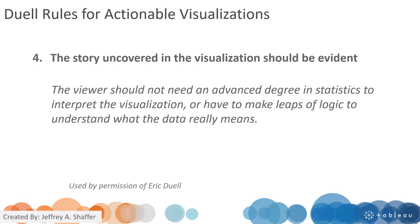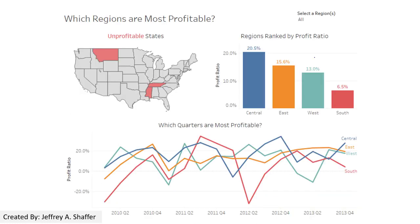The fourth principle is that the story uncovered in the visualization should be evident. The viewers should not need any advanced degree in statistics to interpret your visualization. Using the same earlier example, the visualization answers the question in multiple ways — we know the unprofitable states, can rank profit ratio, and see regions over time. The author sets up a question and then answers it in an obvious way.